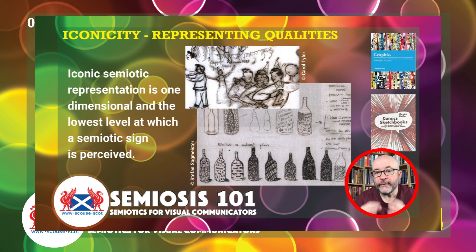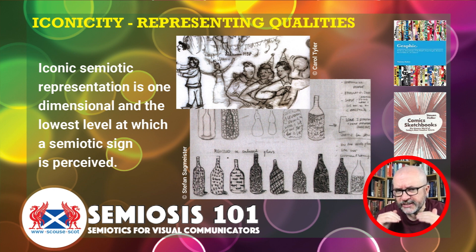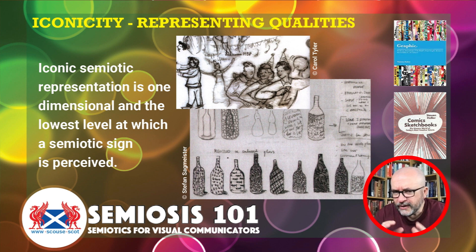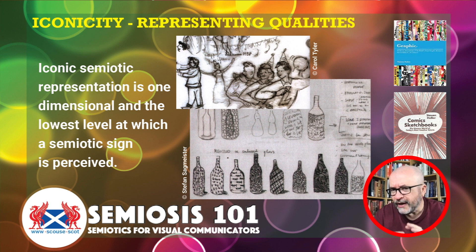In this week's talk we're going to be focusing in on iconicity. What we mean by iconicity is the first starting point of semiotic communication as far as graphic designers and illustrators are concerned, which is the iconic semiotic representation. This level of semiotic representation of the concept that we want to communicate is only one-dimensional and it is the lowest level at which a semiotic sign is perceived by our target audience. That is important — our target audience — because that's who we're really talking about in these talks. How can you craft your visual communication using Peirce's semiotic theory to enhance how you effectively communicate to your target audiences?